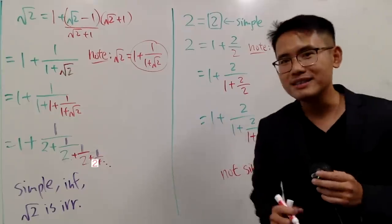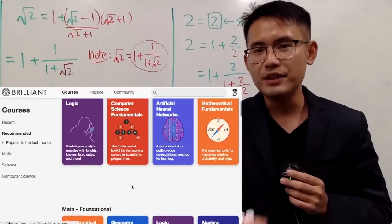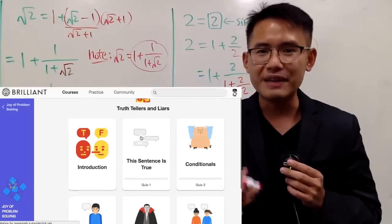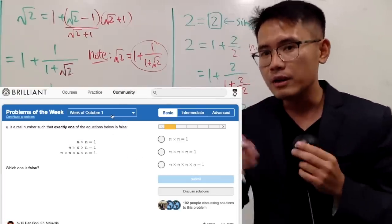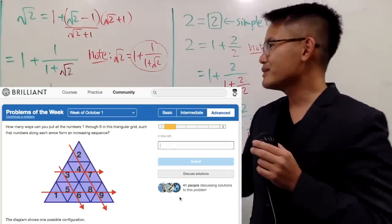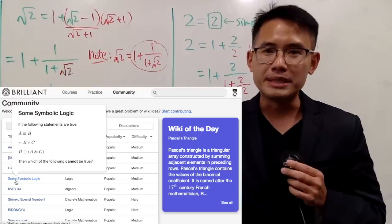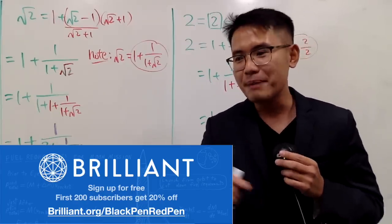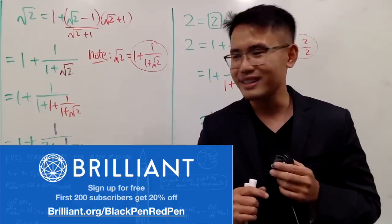Hopefully you guys enjoyed this video, and maybe I will work out more continued fractions later. I want to thank Brilliant.org for sponsoring this video. If you're looking for a place to learn about math, science, or physics, check out Brilliant.org — they offer courses in calculus, discrete math, number theory, logic, and probability. They also offer weekly challenge questions ranging from basic to advanced. Use the link brilliant.org/blackpenredpen to get 20% off an annual premium subscription. Thank you so much for watching, and as always, that's it.